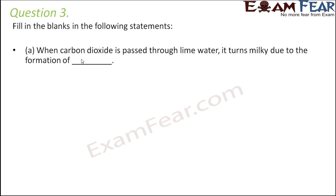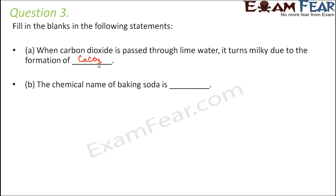It turns milky due to the formation of calcium carbonate, as we saw in the reaction. The chemical name of baking soda is sodium bicarbonate. Baking soda is a base and is called sodium bicarbonate.